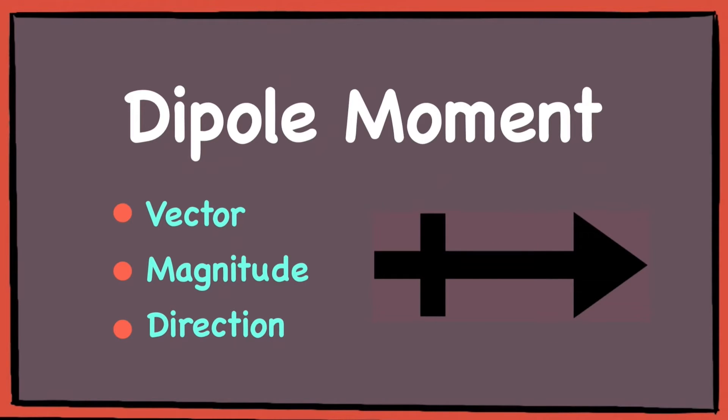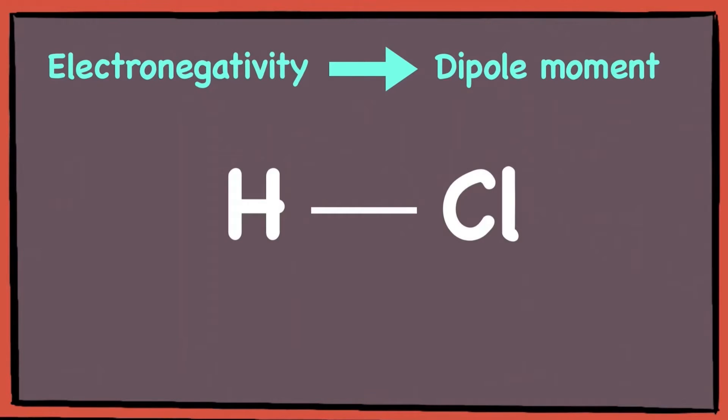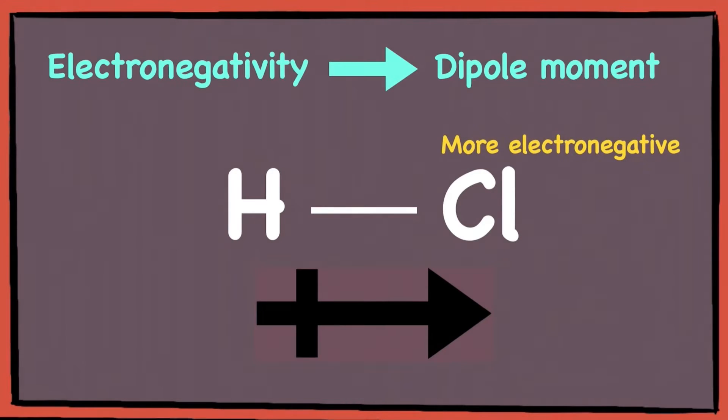Each molecule has a dipole moment, and the electronegativity of its atoms determines the dipole moment of a molecule. For example, in this hydrochloric acid molecule, since chlorine is more electronegative than hydrogen, this HCl molecule has a dipole moment with the arrow pointing towards the more electronegative chlorine atom.